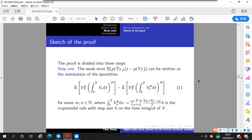Let me give you a sketch of the proof. The proof can be divided into three steps. In the first step, we show that the weak error can be written as the summation of these quantities. So we see that in these quantities, we have this trapezoidal rule with step size h on the time integral of V. So step one means that we have transferred error analysis of the weak error to the analysis of this quantity.